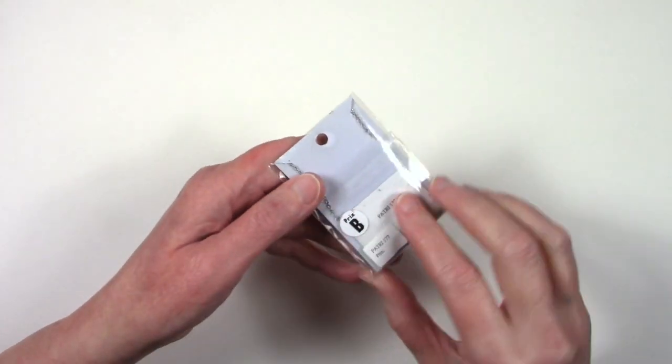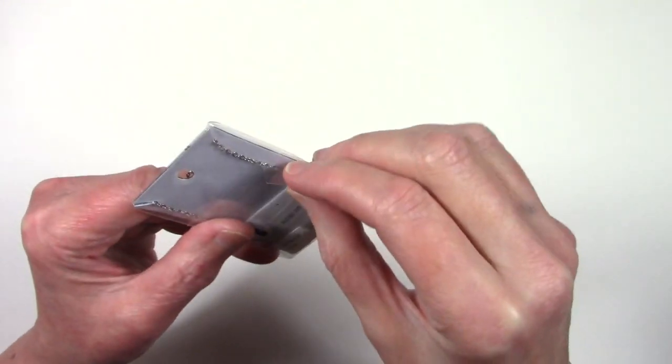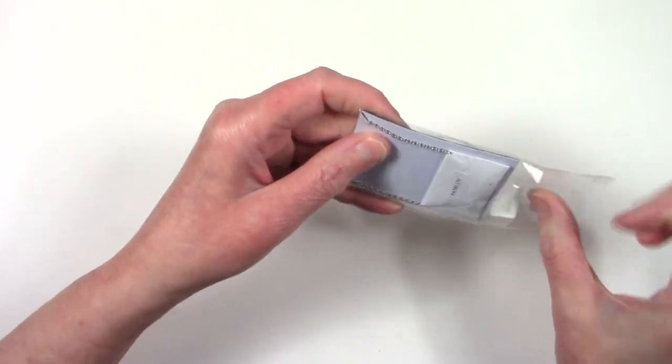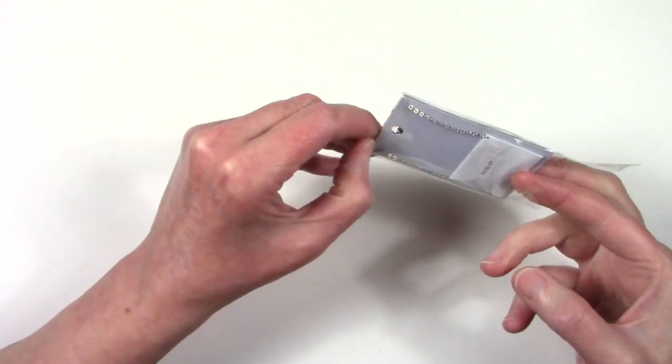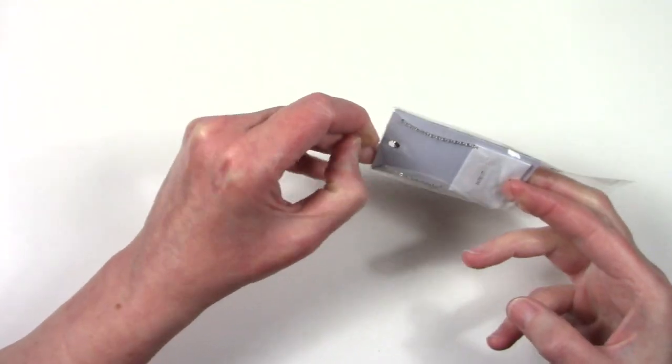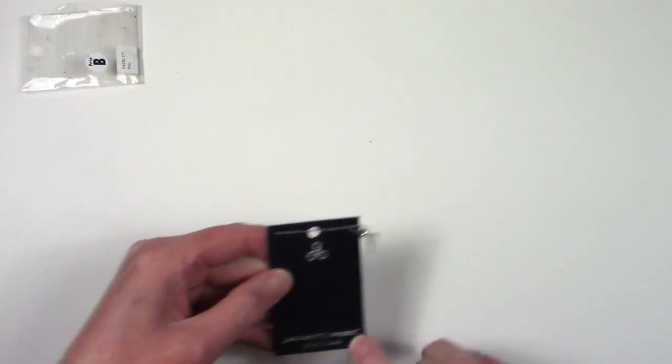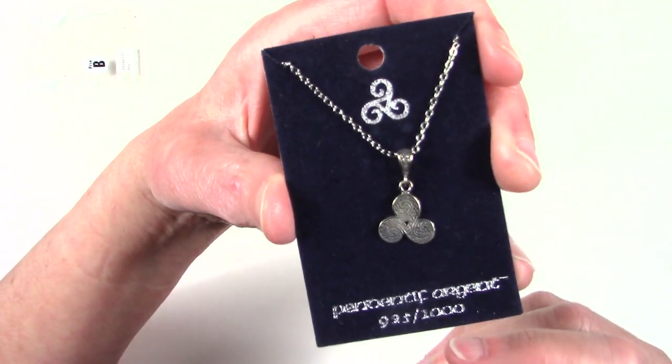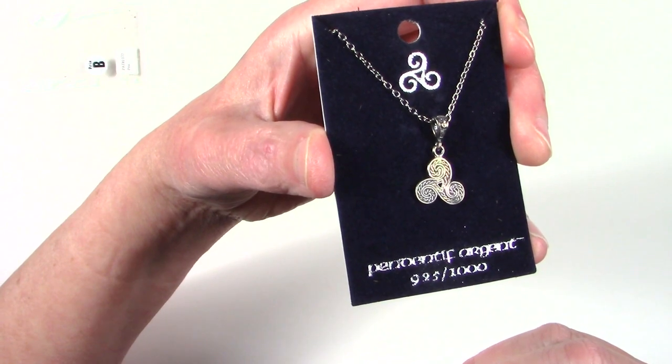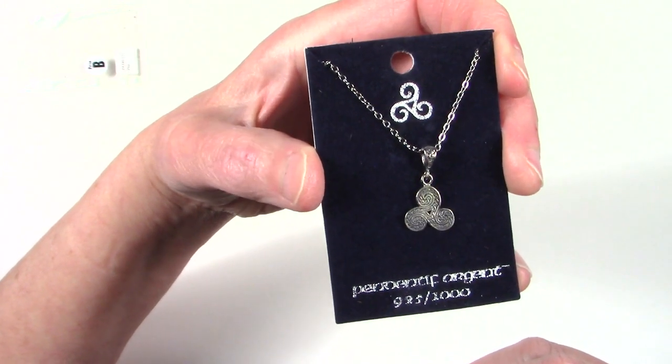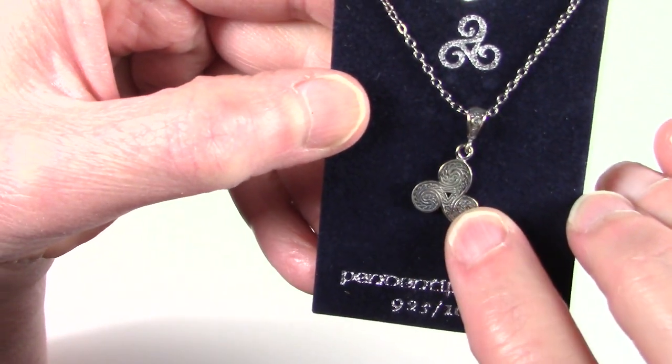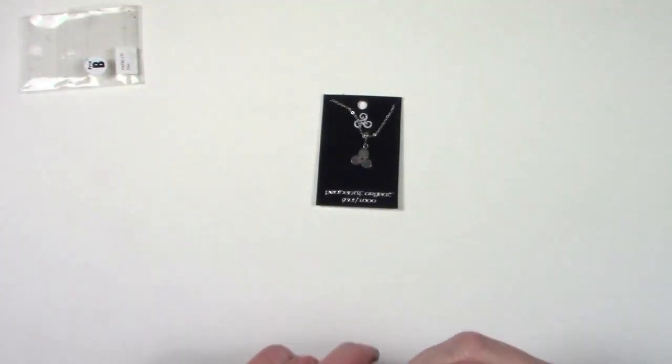So I'm going to take this out. So it came in this package. So let's just take it out of the package and take a look. It says it's Sterling 925. Wow, it's really in that package. So let's take a closer look. I like the design on there. Nice chain. It's really nice filigree actually on there if you look at it closer.